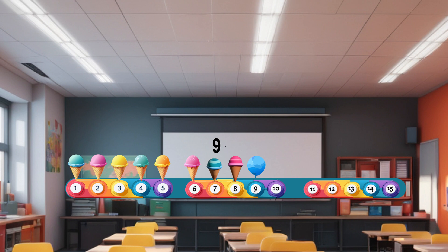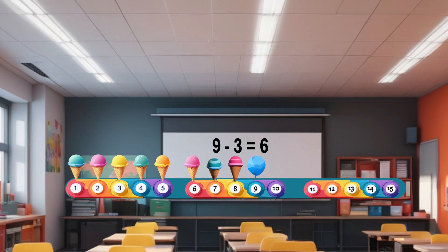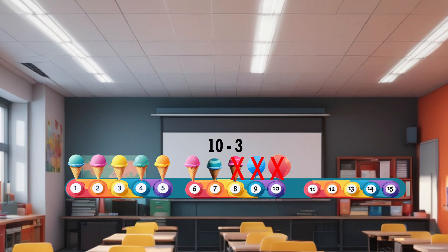Nine minus three equals six. Ten minus three equals seven.